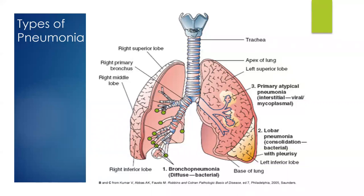Looking at the comparison image, on the left side you can see bronchopneumonia — it's diffuse, all over both lungs, with those infected alveoli scattered throughout. On the right is lobar pneumonia — just that one specific lobe involved. A better X-ray image in a few slides will further illustrate the difference between lobar and bronchopneumonia.